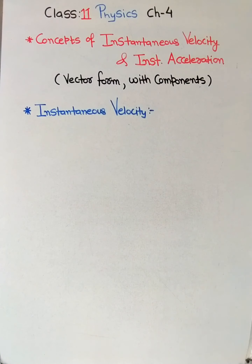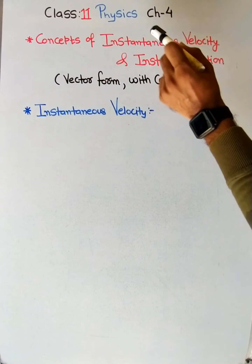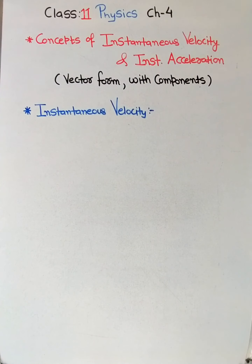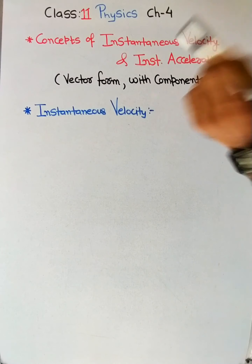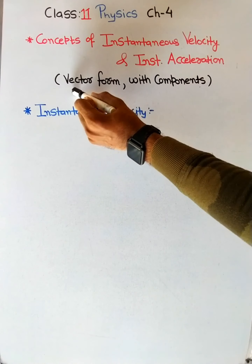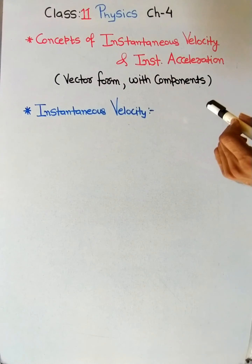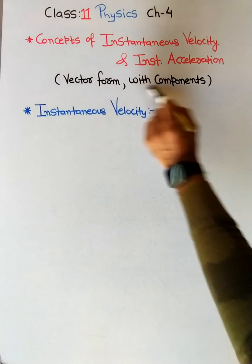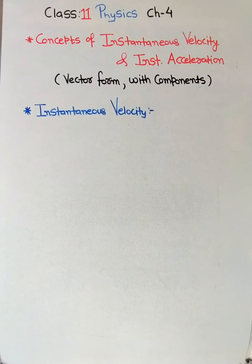Hello everyone, welcome back to this channel. We are studying Class 11 Physics, Chapter 4: Motion in a Plane. Today in this video we are going to restudy the concept of instantaneous velocity and instantaneous acceleration. We have already studied this in Chapter 3, but now the change will be that these two concepts will be in vector form, and then we will represent these two physical quantities with their components.